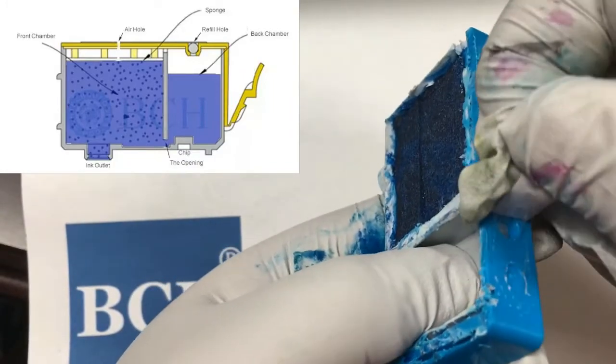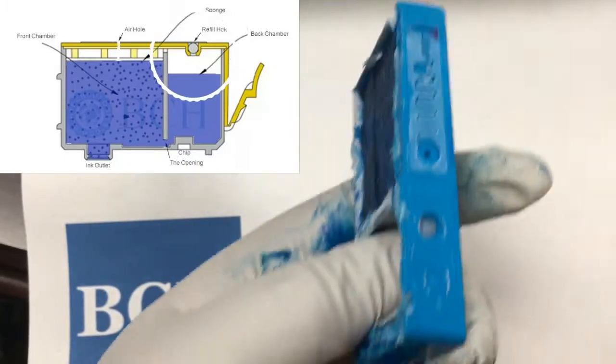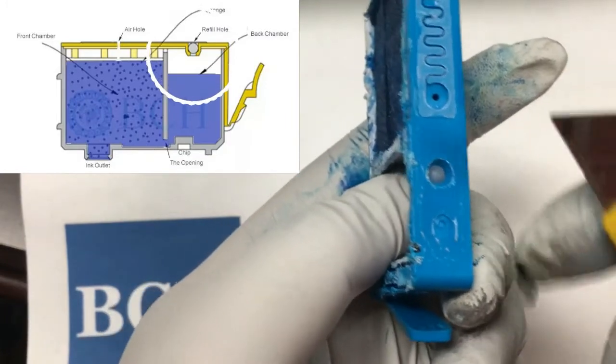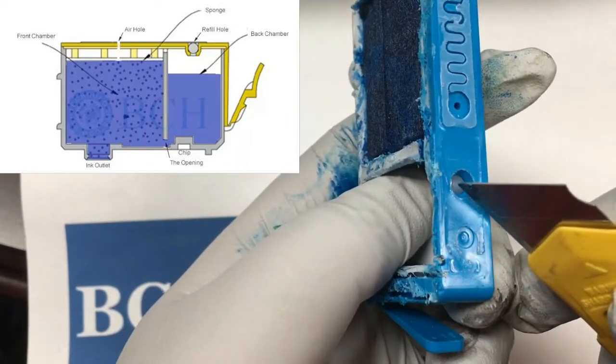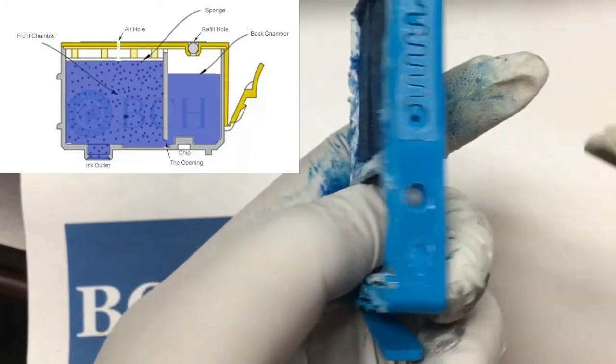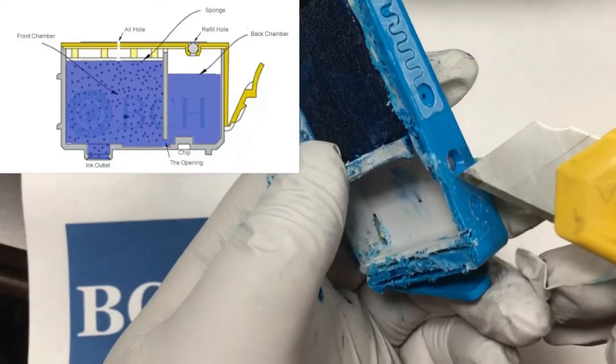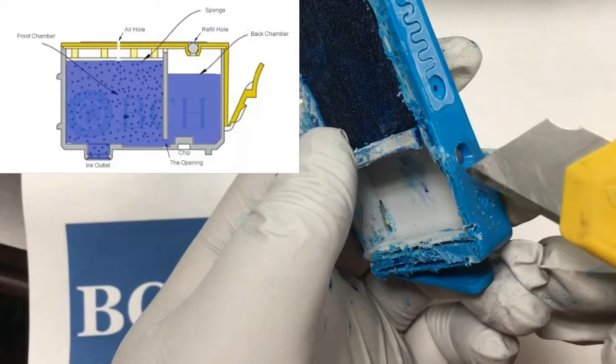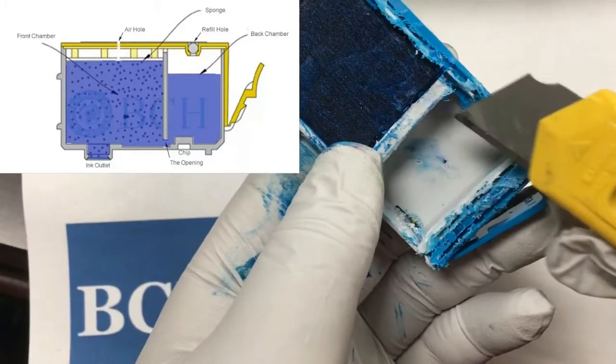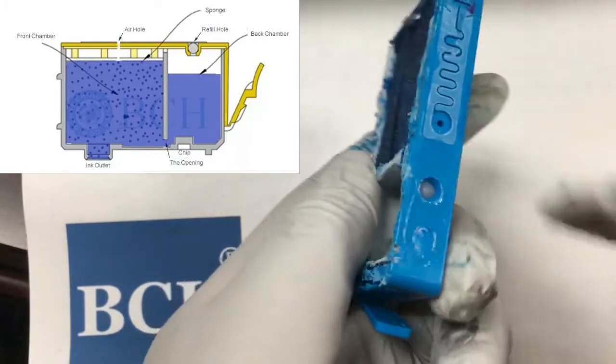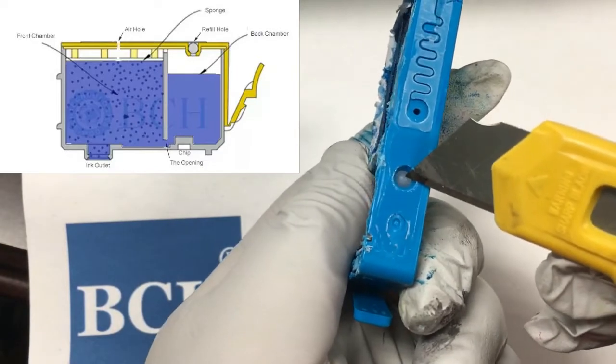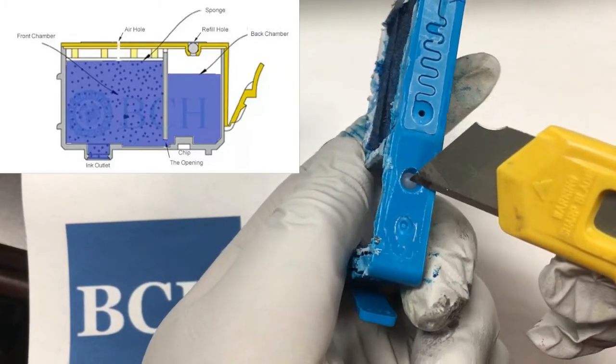On top of the back chamber, there's a refill hole. For XL cartridges, HP injects ink into this hole and seals it with a plastic ball. The refill hole is not used by regular or startup cartridges, although they still have this opening and the plastic ball.